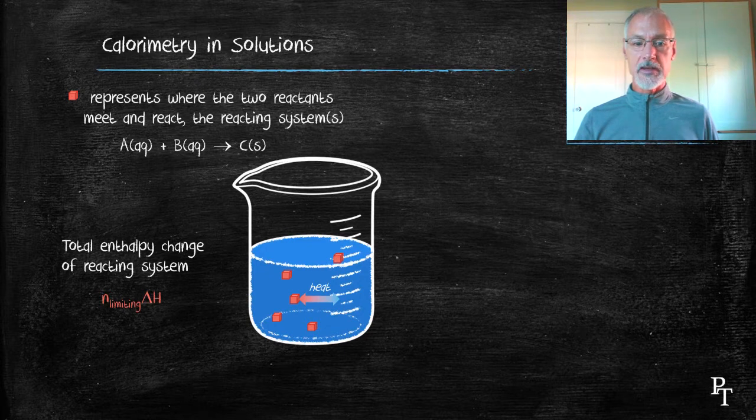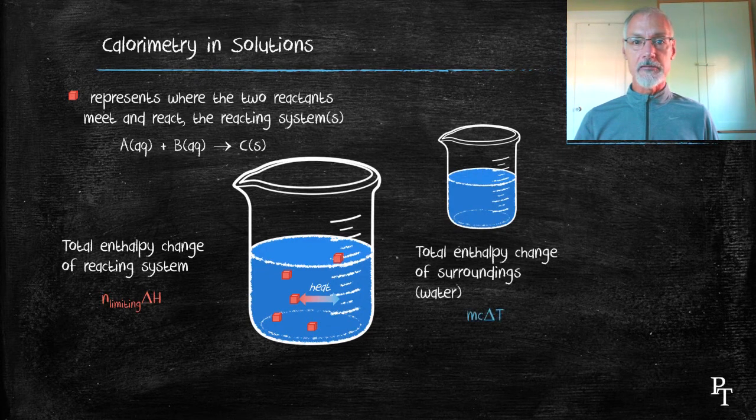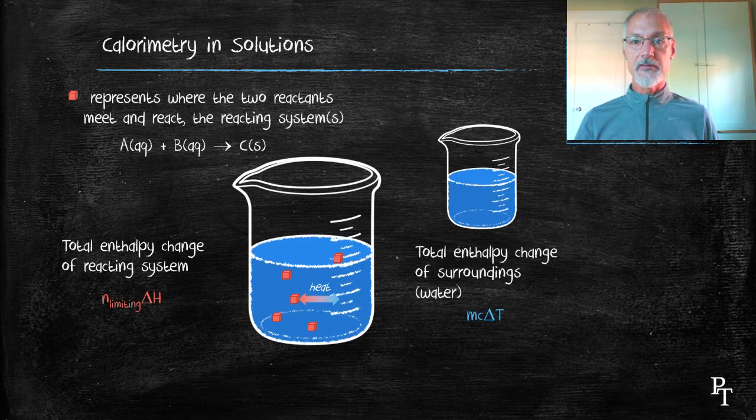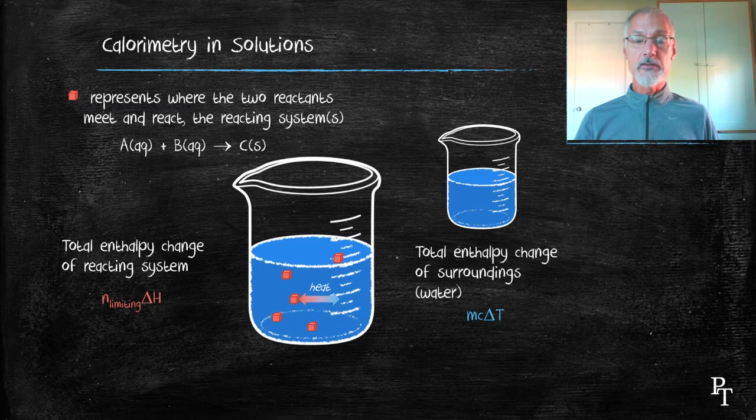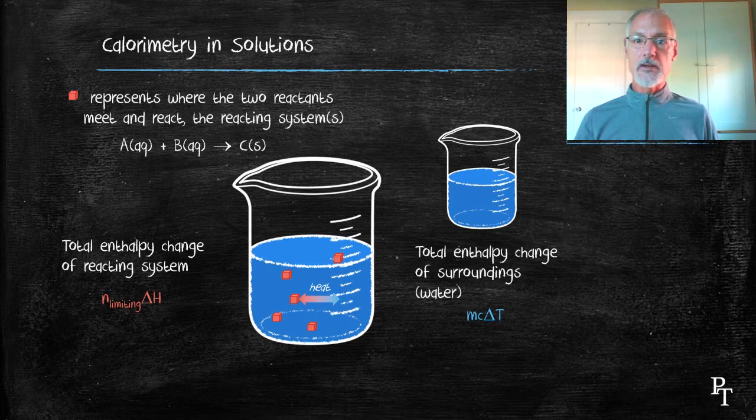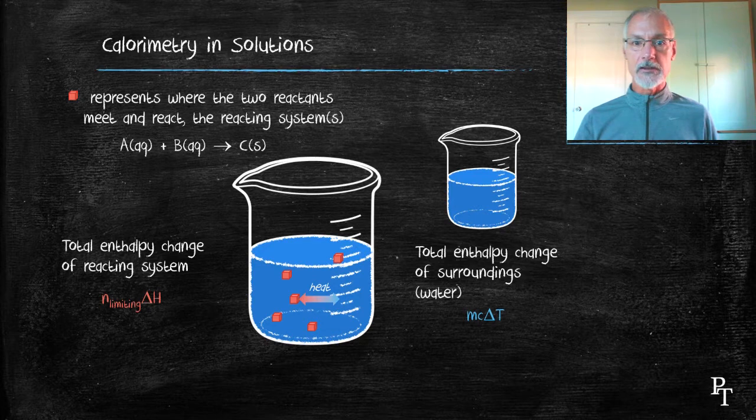The surroundings in this particular case is the water itself. The mass of water, its specific heat, and delta T can all be used to measure the enthalpy change of the water. So in this case, the water acts as the surroundings, and the system is sort of mixed in throughout that water.